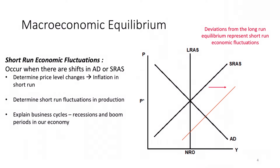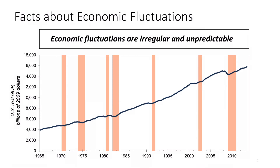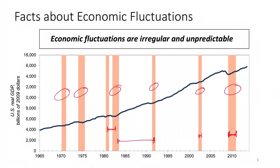Short run economic fluctuations are also what we consider business cycles. There are a few things that are true when we think about economic fluctuations. The first is that economic fluctuations are irregular and unpredictable. The orange lines you see here are the recessionary periods in the United States. The distance between recessions varies drastically, as does the duration — some are short, some are long, some are more severe than others.